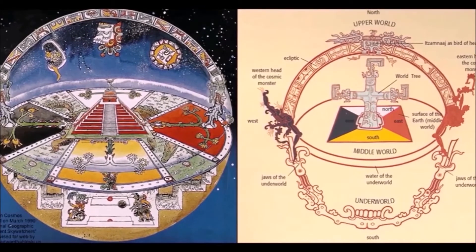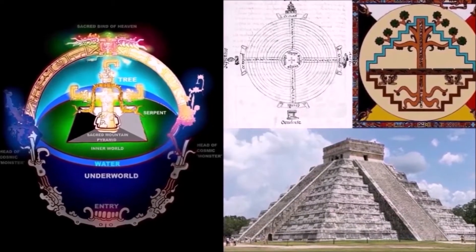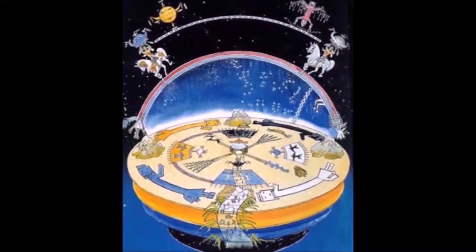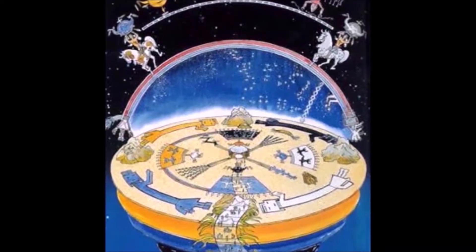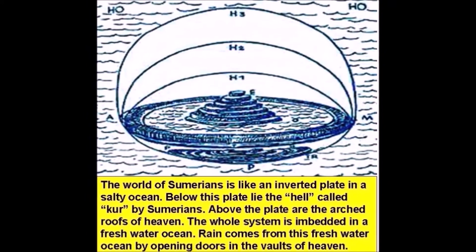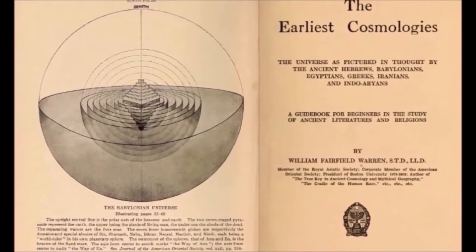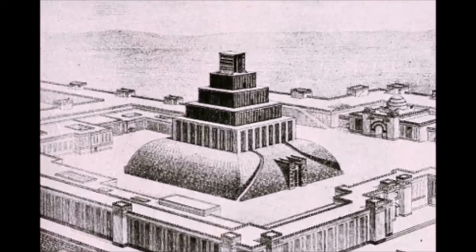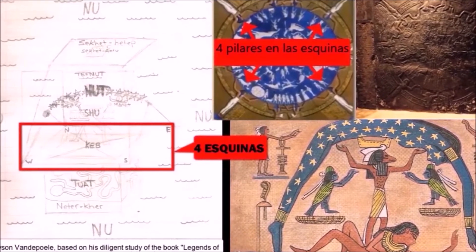First we have the Mayan cosmology with the flat Earth and four corners. Then we see the Navajo, very similar. Sumerian cosmology also contains a pyramid. We see that Babylonian and pre-Babylonian cosmology shows us this as well.